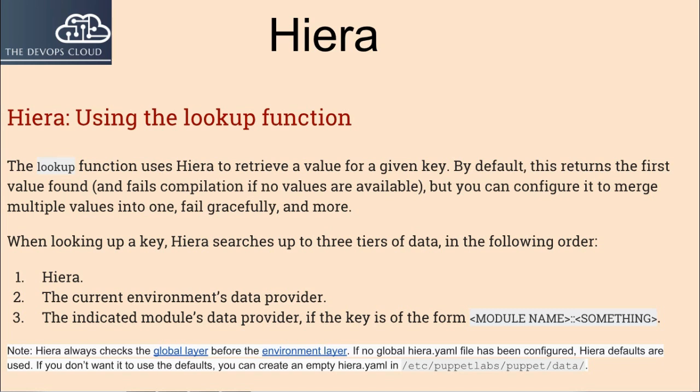Hiera — using the lookup function. The lookup function uses Hiera to retrieve a value for a given key. By default, this returns the first value found and fails compilation if no values are available, but you can configure it to merge multiple values into one, fail gracefully, and more. When looking up a key, Hiera searches up to three tiers of data in the following order: the global layer, the current environment's data provider, and the indicated module's data provider if the key is of the form module_name::something. Note that Hiera always checks the global layer before the environment layer. If no global hiera.yaml file has been configured, Hiera defaults are used. If you don't want it to use the defaults, you can create an empty hiera.yaml in /etc/puppetlabs/puppet/data/.